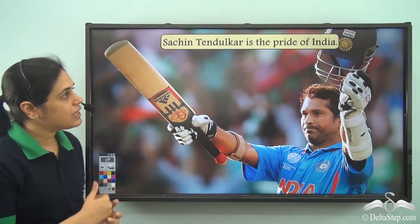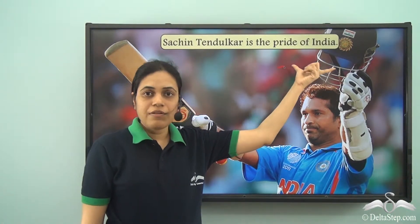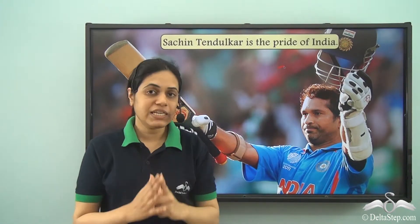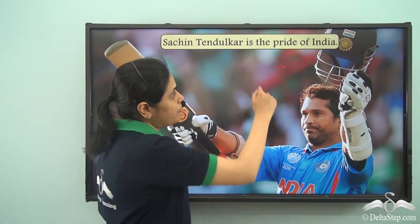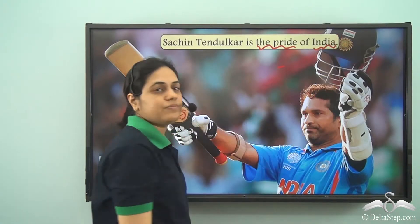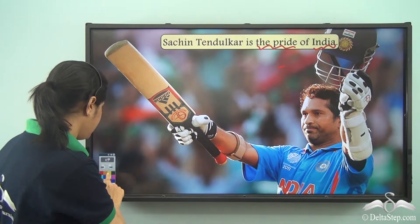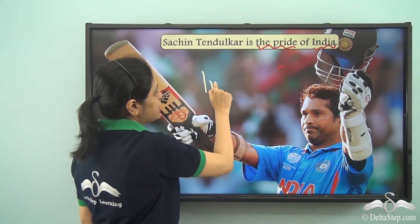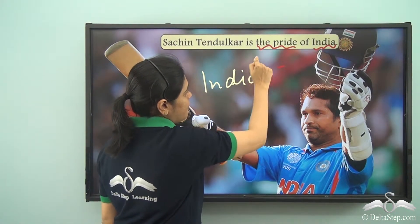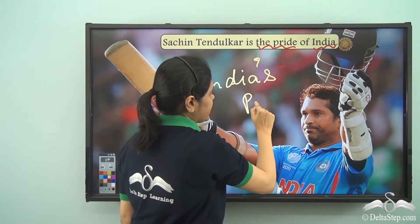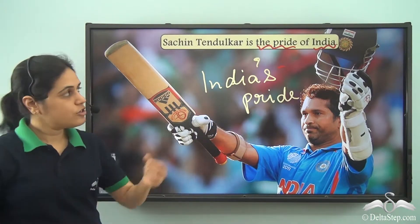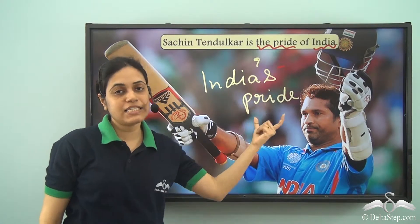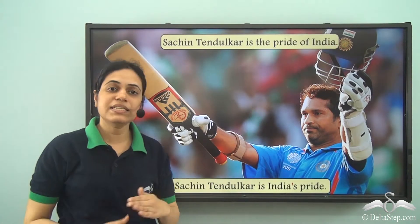'Sachin Tendulkar is the pride of India.' The phrase 'the pride of India' will become 'India's pride'. An easy way to see this is: when we have 'something of something', we write the possessor first, add apostrophe S, then the possessed. So 'the pride of India' becomes 'India's pride' — remember to skip the word 'the'. Sachin Tendulkar is India's pride.